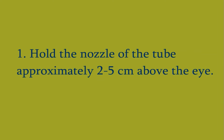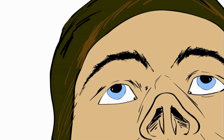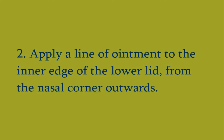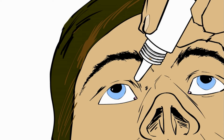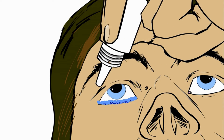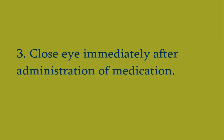For eye ointment — first, hold the nozzle of the tube approximately two to five centimeters above the eye. Second, apply a line of ointment to the inner edge of the lower lid from the nasal corner outward. Third, close your eye immediately after administering the medication. That was the animation demonstration for eye drops and eye ointment.